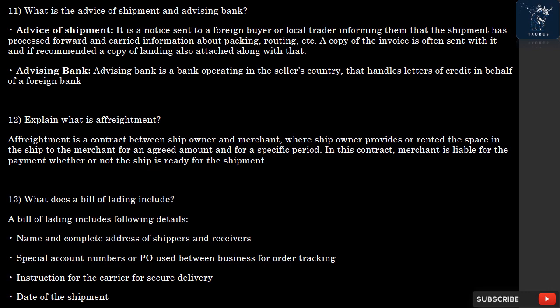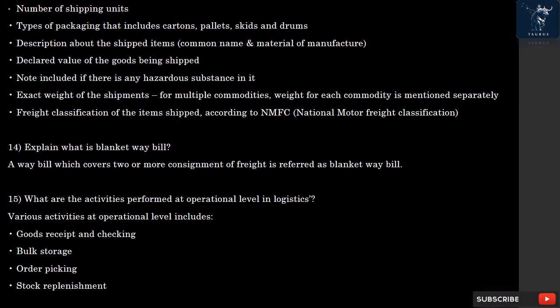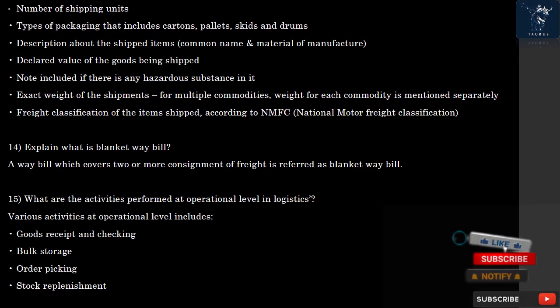Question 13: What does a Bill of Lading include? A Bill of Lading includes: name and complete address of shippers and receivers; special account numbers or PO numbers used between businesses for order tracking; instructions for the carrier for secure delivery; date of the shipment; number of shipping units and types of packaging including cartons, pallets, skids, and drums; description of shipped items including common name and material of manufacture; declared value of goods; note if any hazardous substance is included; exact weight of shipments with each commodity listed separately; and freight classification according to NMFC, National Motor Freight Classification.